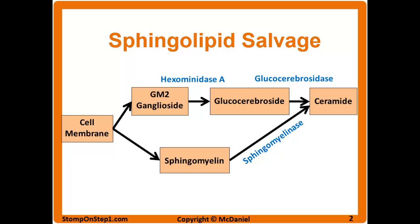Here is the pathway that's affected by the three diseases I'm going to be talking about. You don't necessarily need to memorize this exact order or be able to recreate this on your own — I just wanted to help solidify some of the concepts by showing you this graph. The sphingolipids from the cell membrane or elsewhere are broken down into GM2 ganglioside or sphingomyelin. Ganglioside is then acted on by hexosaminidase A to become glucocerebroside, which is then acted on by glucocerebrosidase to become ceramide. Sphingomyelin is acted on by sphingomyelinase to become ceramide.